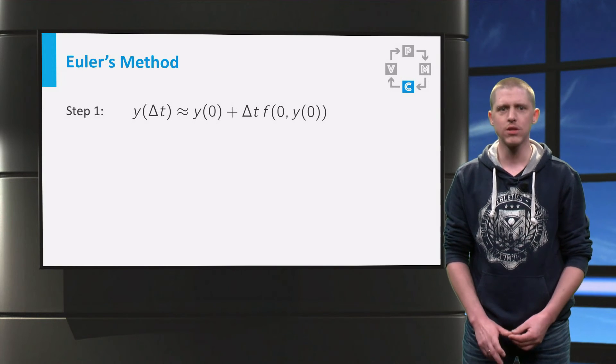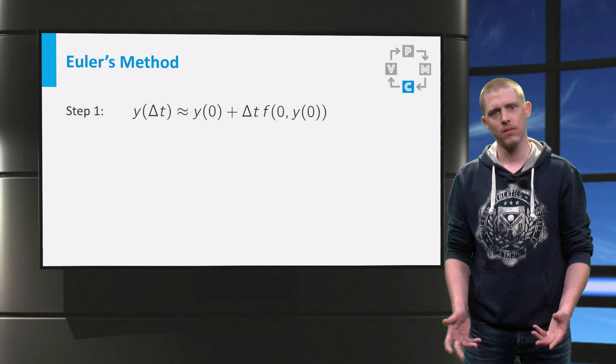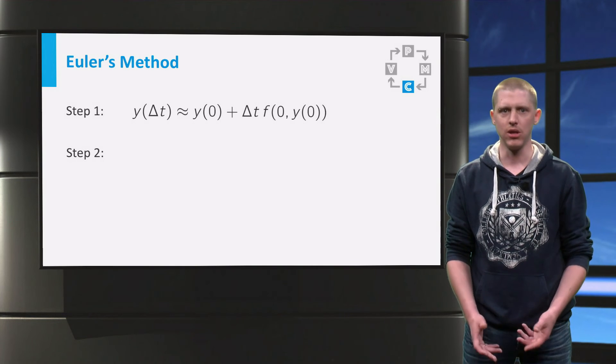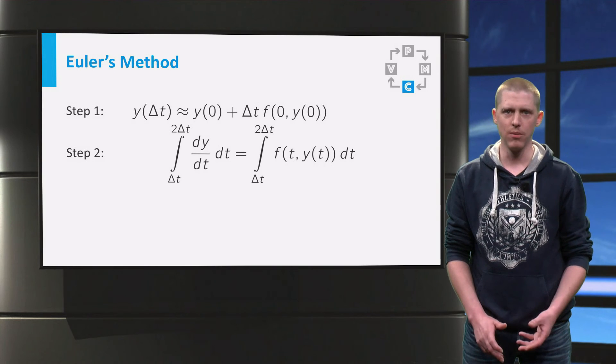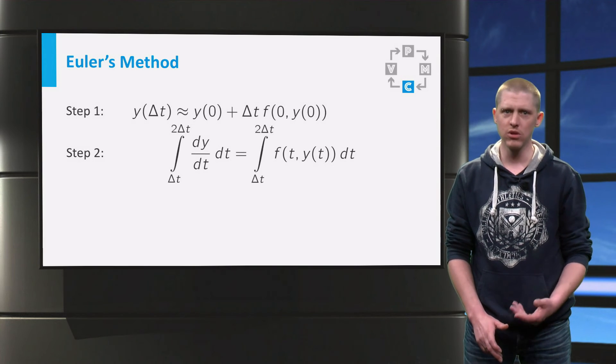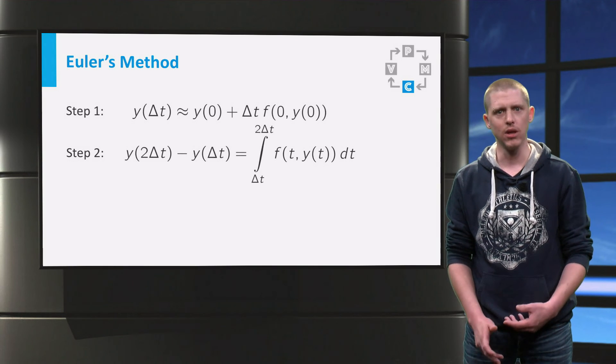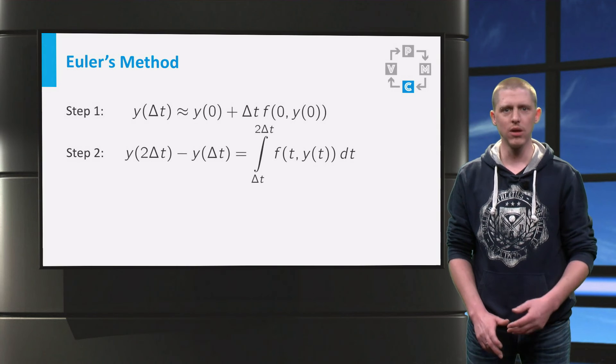This equation is the first step of Euler's method. So what's next? Let us do another step forward in time of length delta t. So let us integrate the differential equation over time from delta t to 2 times delta t. The left hand side is easily calculated to be y at 2 times delta t minus y at delta t.